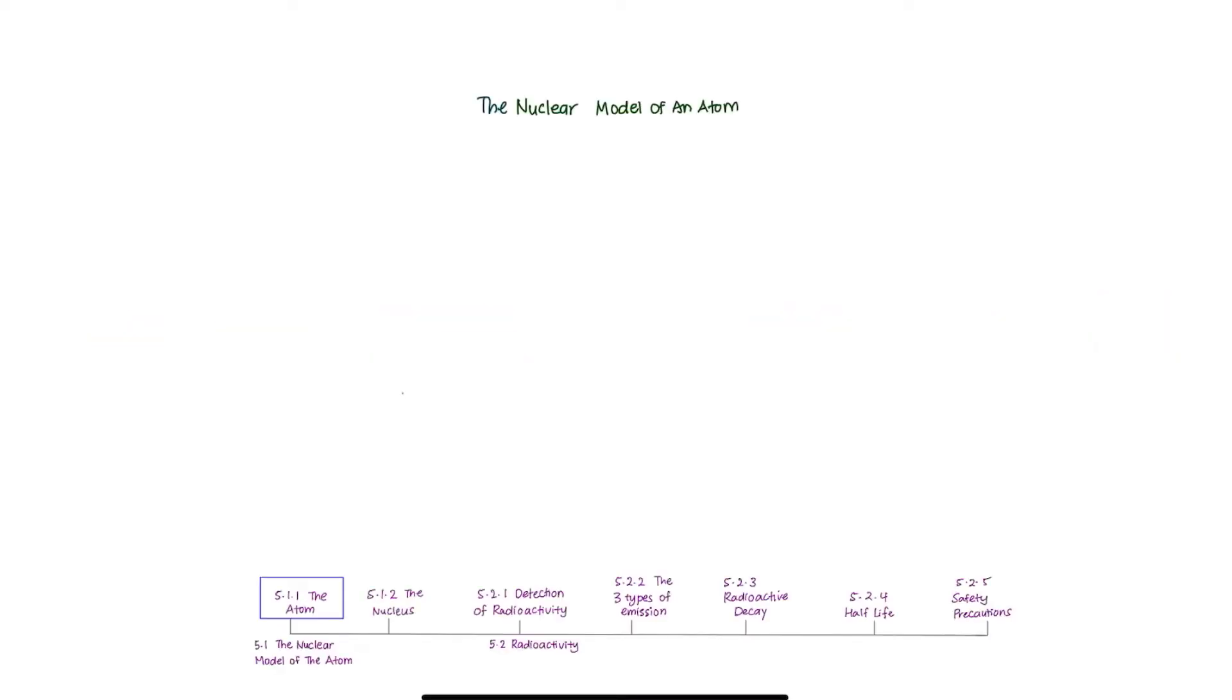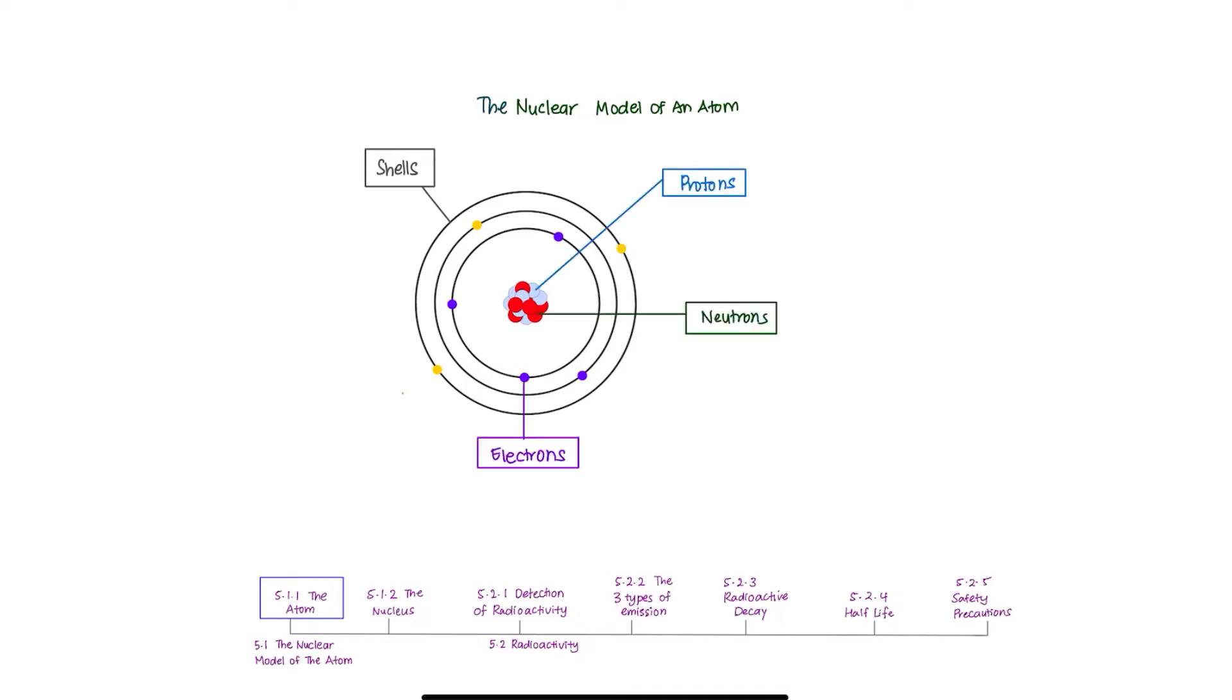The nuclear model of an atom. So we have got here a model of an atom. It consists of three subatomic particles, which are protons, neutrons and electrons. The protons and neutrons exist inside the nucleus of an atom, which is the core of an atom.